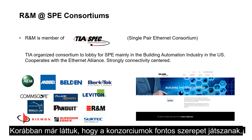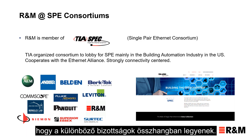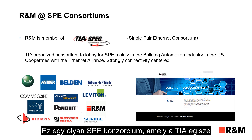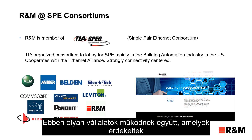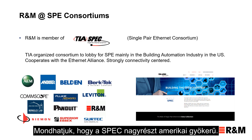Consortiums play an important role because they bring together different companies and ensure that all the different committees stay aligned. The first single-pair Ethernet consortium to be founded was the TIA SPEC — a consortium operating under the umbrella of TIA, bringing together mainly cabling companies interested in single-pair Ethernet. R&M is part of it. SPEC is primarily US-based and strongly driven by a connectivity view, focusing on building automation.